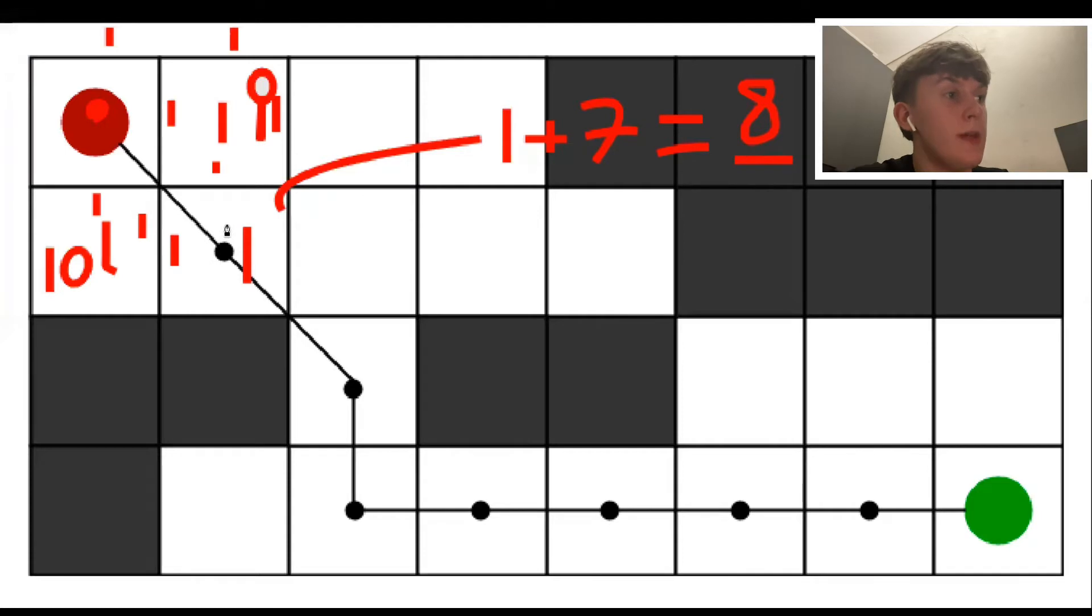We then do the same process for the node's adjacent nodes, repeat until the node we're analyzing becomes the end node. So essentially when the start node becomes the end node, the algorithm ends. That's essentially what the condition is for ending the algorithm.